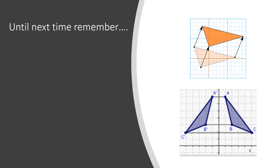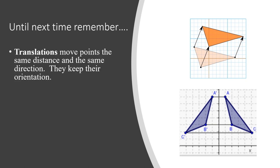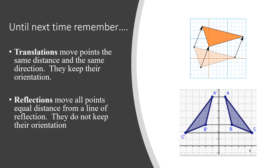That's all for today. Until next time, remember: when we're dealing with a translation, we move points the same distance in the same direction and they keep their orientation. When we're reflecting, we move all points an equal distance from the line of reflection, but they do not keep their orientation — if I start at A prime and work clockwise I go A prime to B prime, but starting at A going clockwise I go from A to C. Until next time, be good and stay safe.